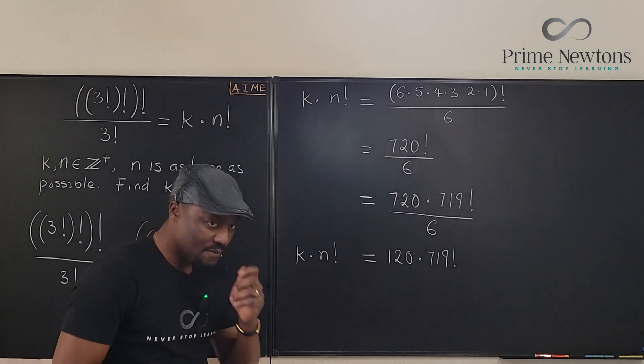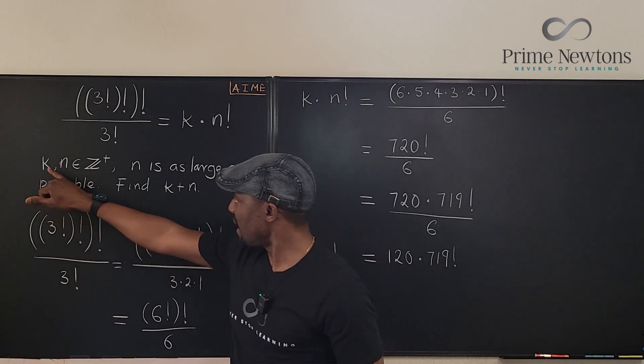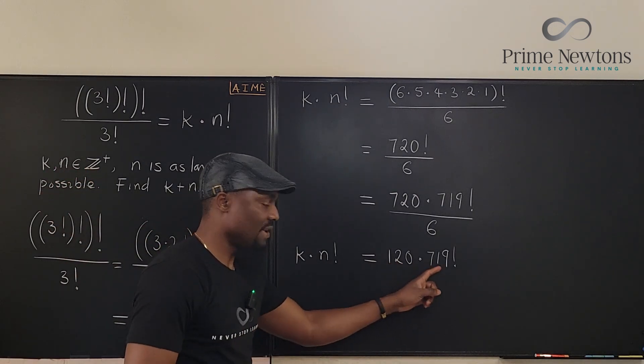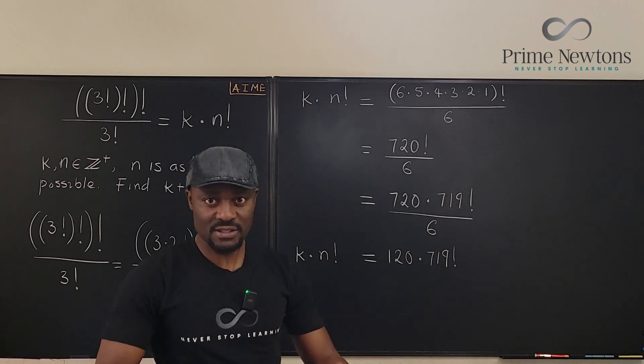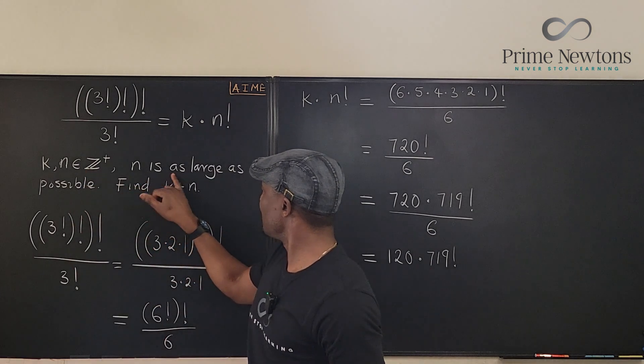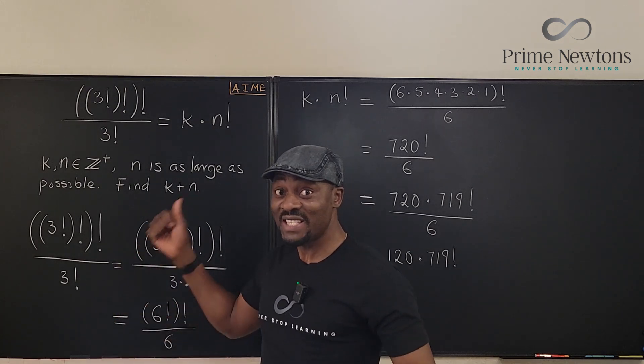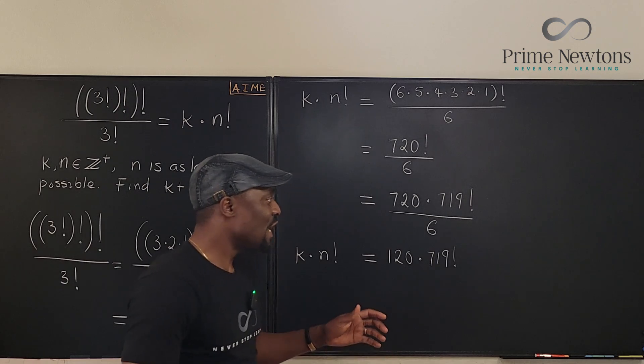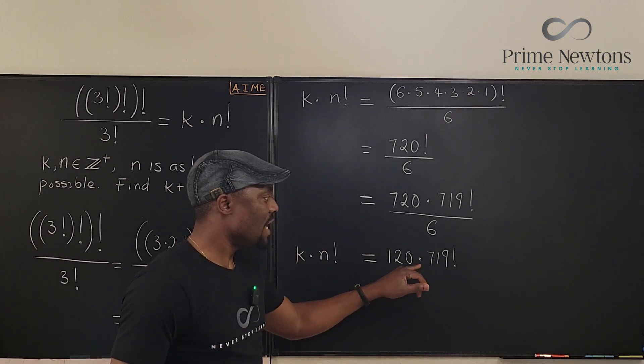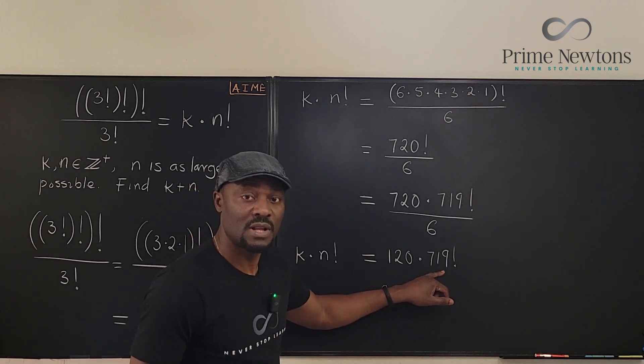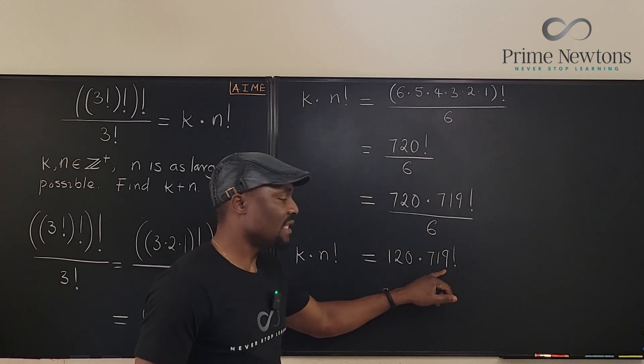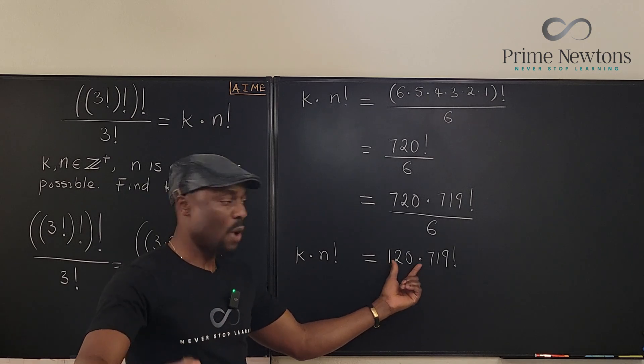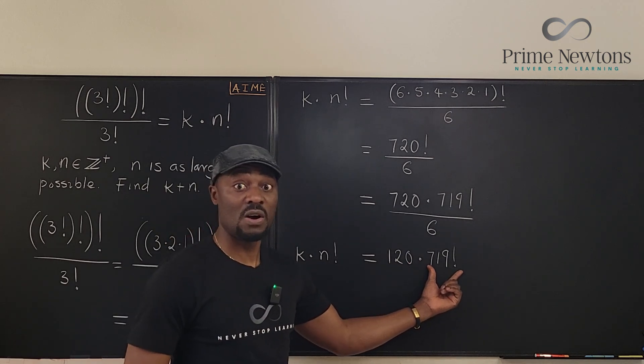Now, remember the condition. K and N are positive integers. Have we arrived at two positive integers? Yes. Next one. N is as large as possible. The reason that sentence was written there, or that part where that information was added is so you're not tempted to say, instead of me stopping at 719 factorial, I could as well say 719 times 718 factorial and put the 719 with this 120. No.